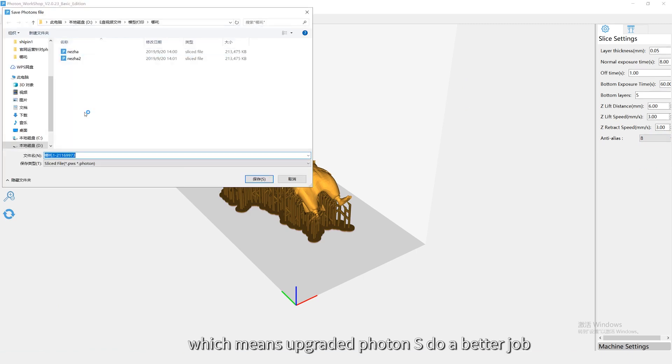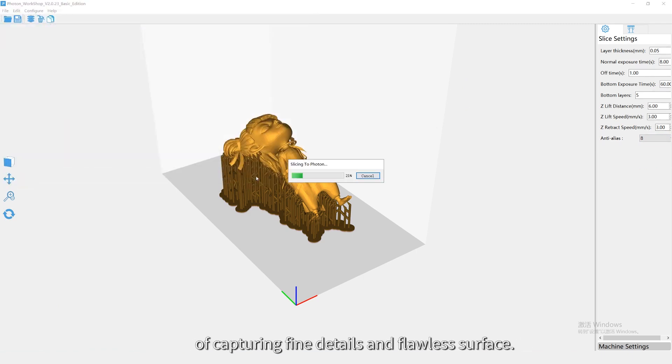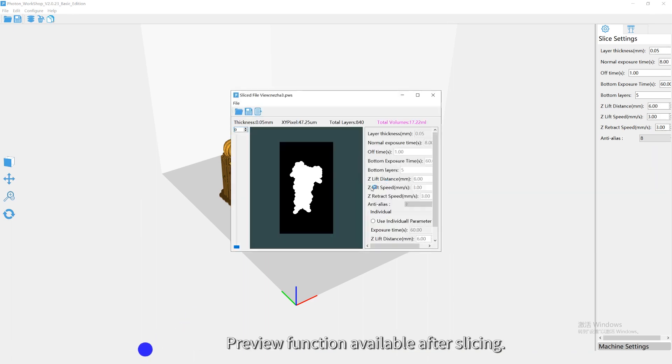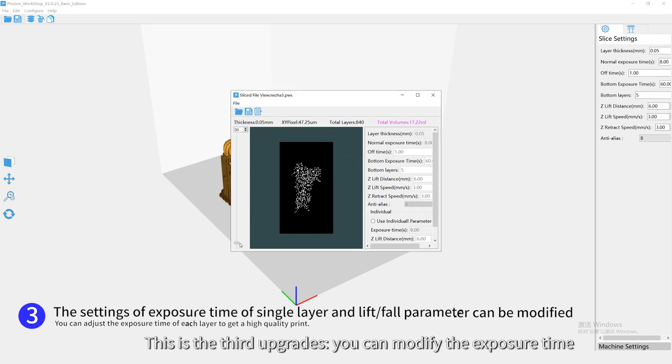This means upgraded Fortin S does a better job of capturing fine details and flawless surface. Preview function available after slicing. This is the third upgrade.